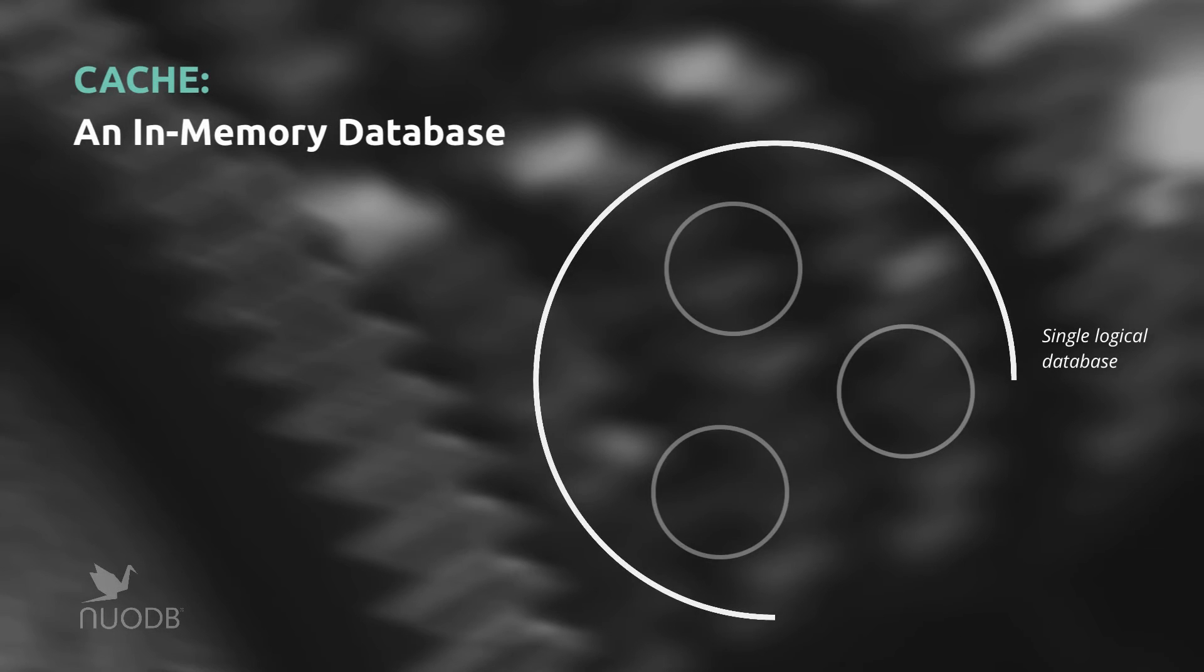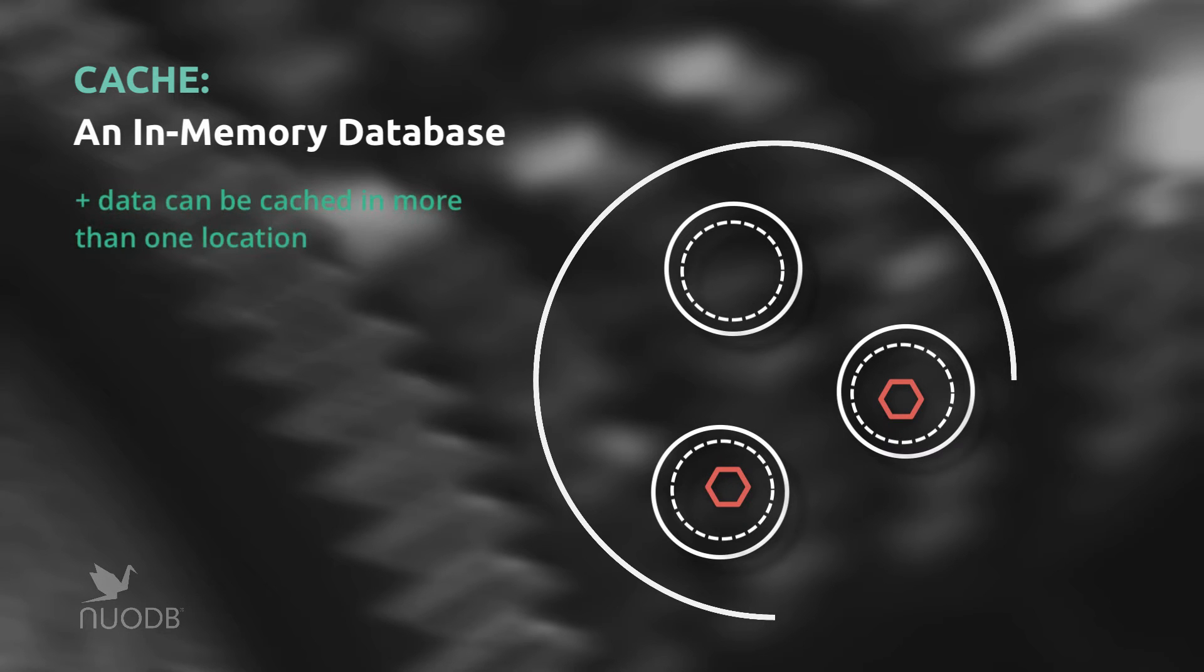NuoDB is based on a memory-centric architecture designed to optimize your database around memory rather than disk. Every peer has an in-memory cache, and at any time data can be cached in one or more locations. Typically, a cache contains a working set of your data.